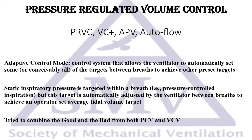So what is PRVC? It's an adaptive control mode, meaning the control system allows the ventilator to automatically set some targets between breaths to achieve other preset targets. The inspiratory pressure is targeted within breaths in a pressure controlled inspiration — so it's not volume controlled, it's actually a pressure controlled mode.